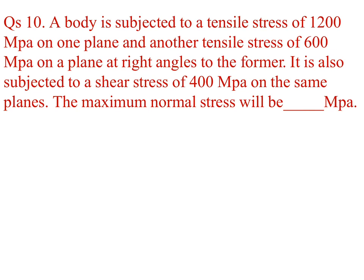A body is subjected to a tensile stress of 1200 megapascal on one plane and another tensile stress of 600 megapascal on a plane at right angles to the former. It is also subjected to a shear stress of 400 megapascal on the same plane. The maximum normal stress will be... maximum value of normal stress is principal stress.